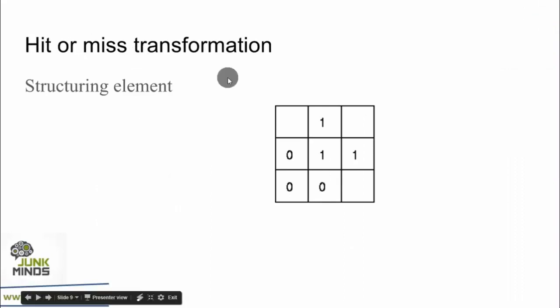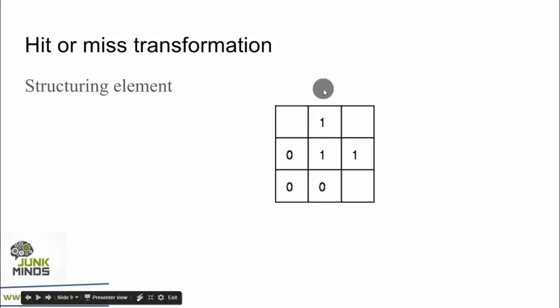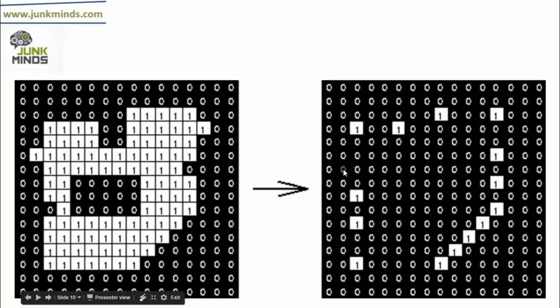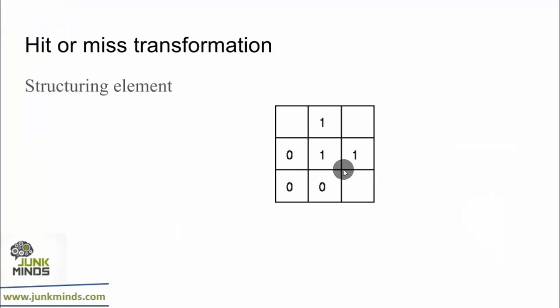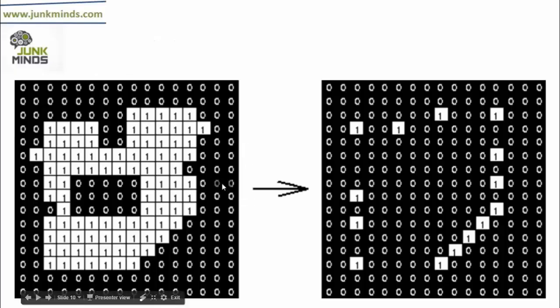The next is the hit-or-miss transform. In all the previous operations, the structuring element was all in the foreground — all positions had ones — and any zero was ignored. But in the hit-or-miss transform, zeros are not ignored. It is a general morphological operation that can be used to look for particular patterns in foreground and background pixels in an image, using an extended kind of structuring element.